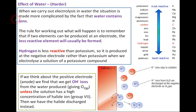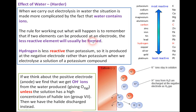When we carry out electrolysis in water, the situation is made more complicated by the fact that water contains ions. The rule for working out what will happen is that if two elements can be produced at an electrode, the less reactive element will usually be formed.